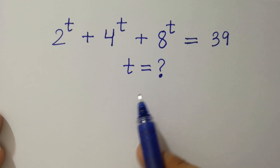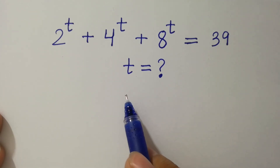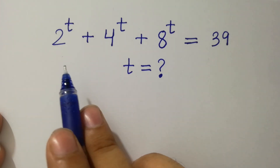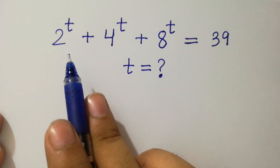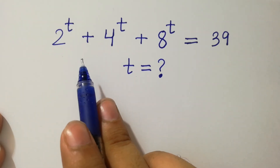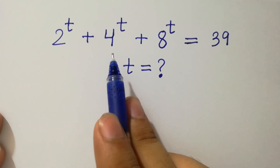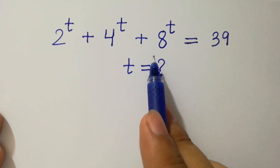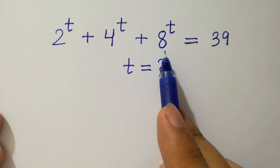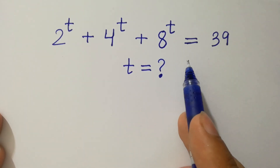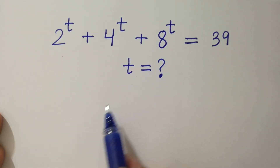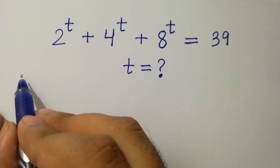Hello friends. Find the value of t if 2 to the power t plus 4 to the power t plus 8 to the power t equals 39. Let's have a solution.